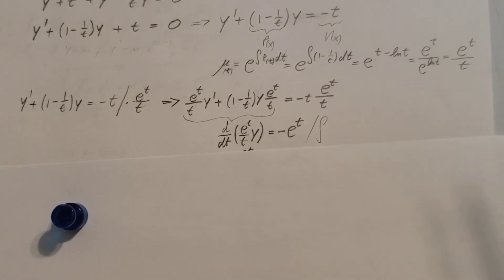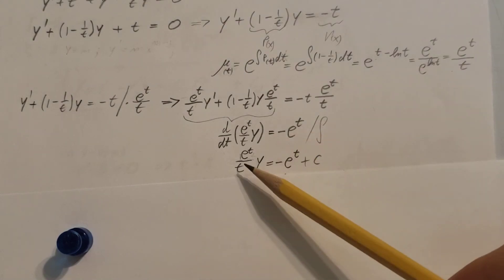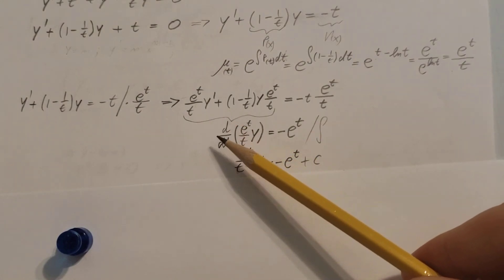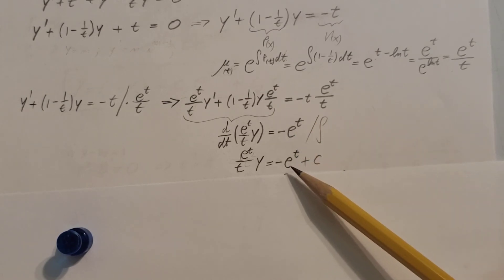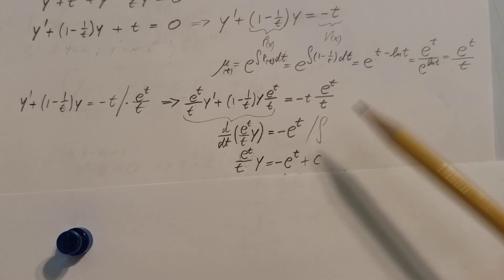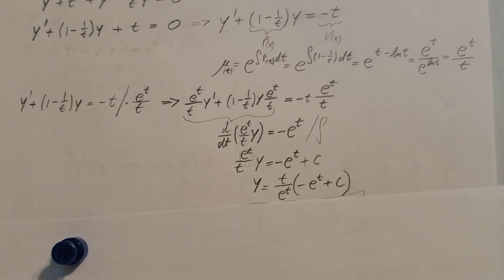Now this equation, I'm going to take an integral of both sides. This will get rid of the derivative over here, and over here we just have to take the integral, which is right here: minus e to the t plus c. Don't forget the c.